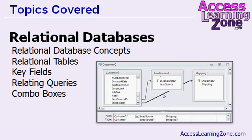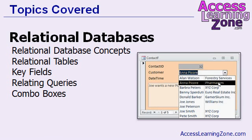We'll talk about different join types in queries. And we'll learn how to set up relational combo boxes, where you can pick a value from one table to store in a second table — for example, picking a customer to store that in the contact table.